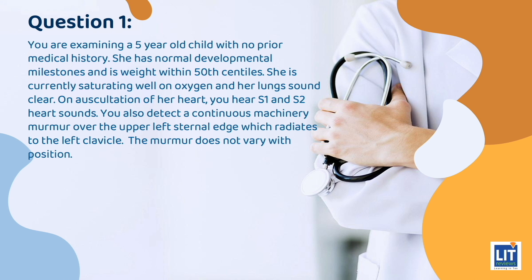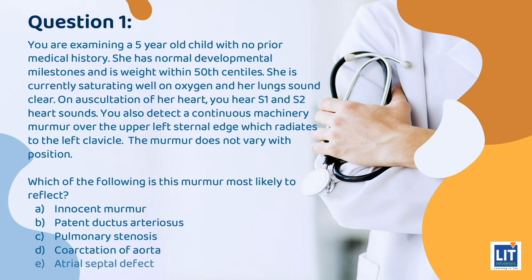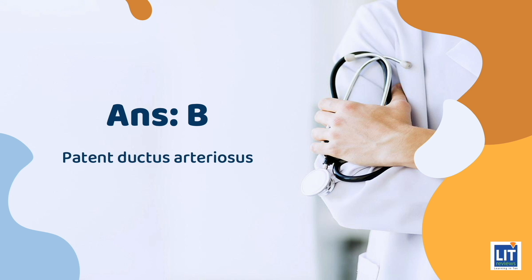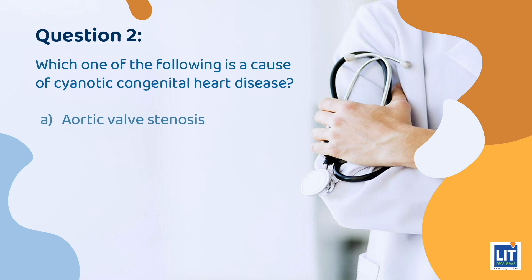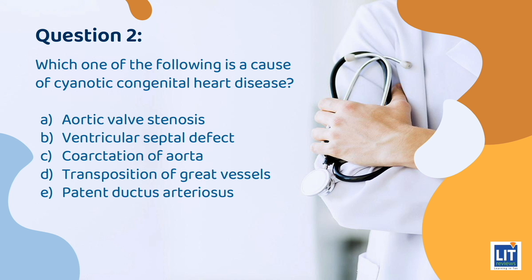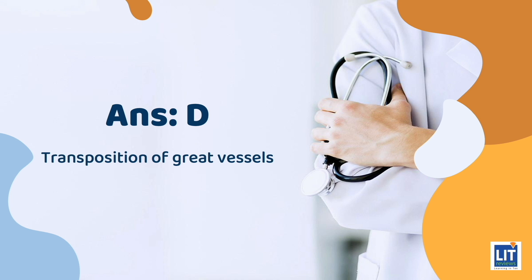Quiz time. You are examining a 5-year-old child with no prior medical history. She has normal developmental milestones and a weight within the 50th percentile. She is saturating well on oxygen and her lung sounds are clear. On auscultation, you hear S1 and S2 heart sounds. You also detect a continuous machinery murmur over the upper left sternal edge, which radiates to the left clavicle. The murmur does not vary with position. The answer is patent ductus arteriosus. Next question: Which of the following is a cause of cyanotic congenital heart disease? The answer is transposition of the great vessels.